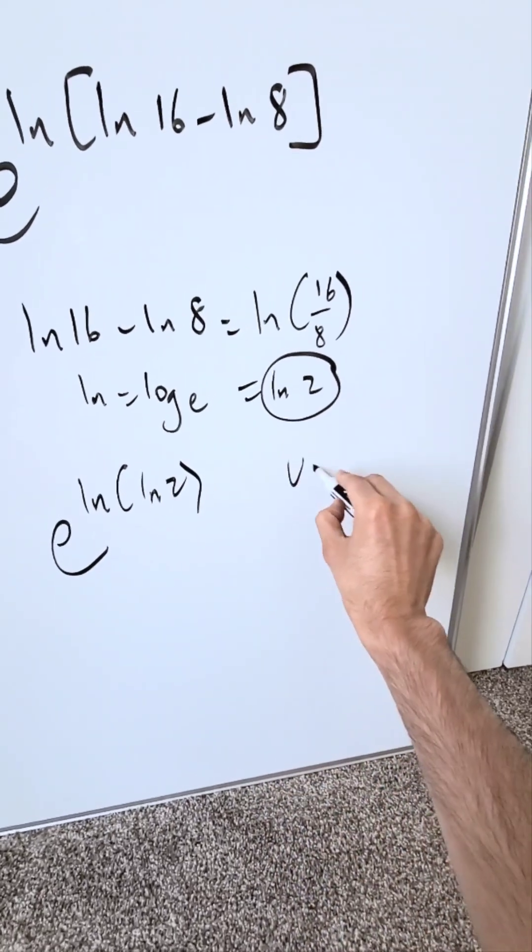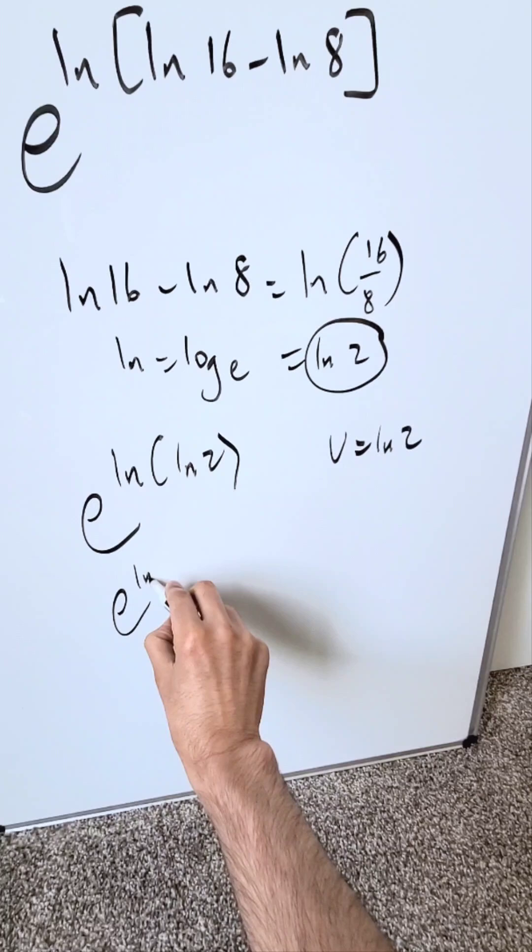Do a substitution of u equals natural log 2. I have e exponent natural log u.